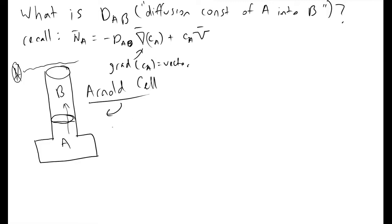The key assumption we make with Arnold cells is that B is insoluble in A. What this means in math is that if this is our Z axis, the flux of B in the Z direction must be equal to zero.